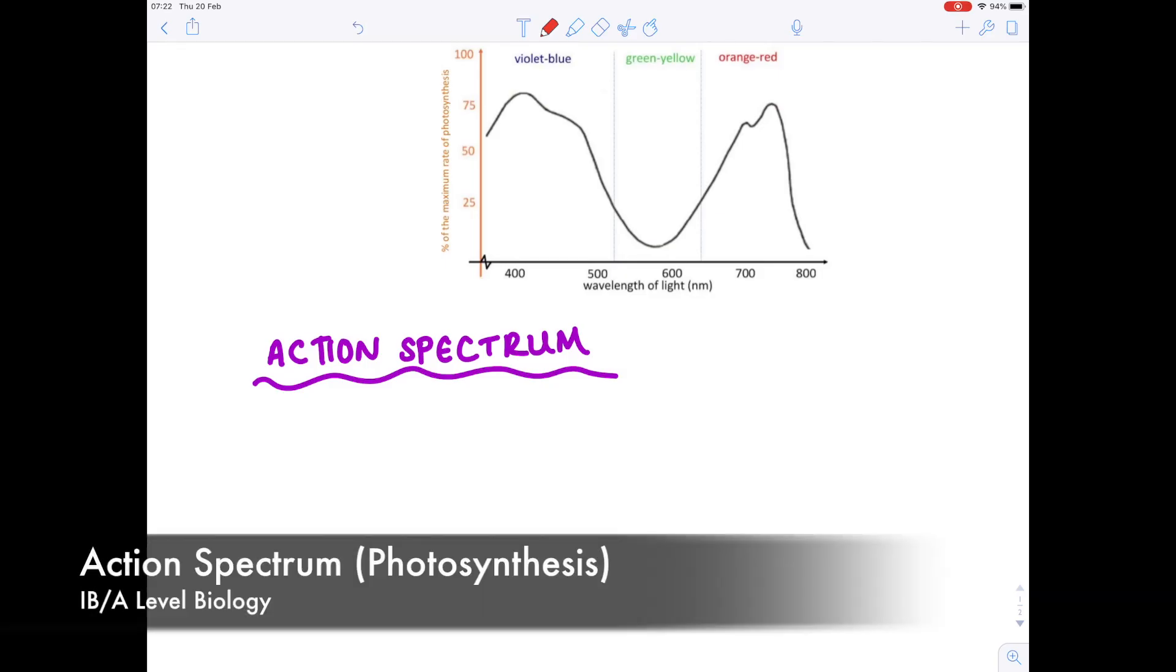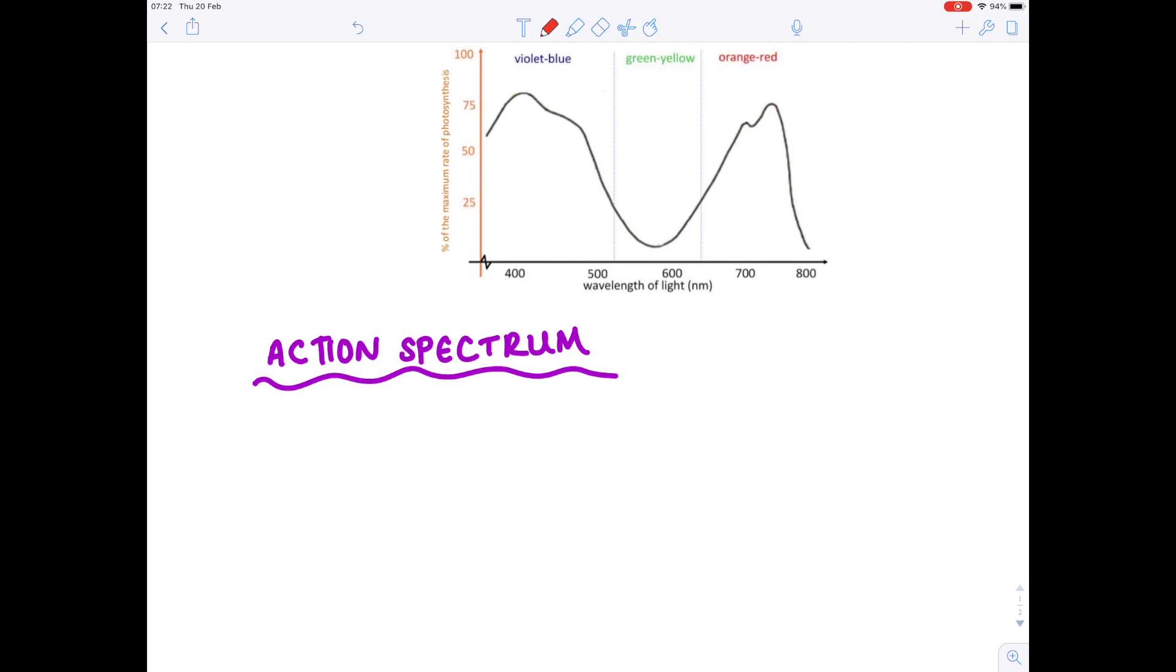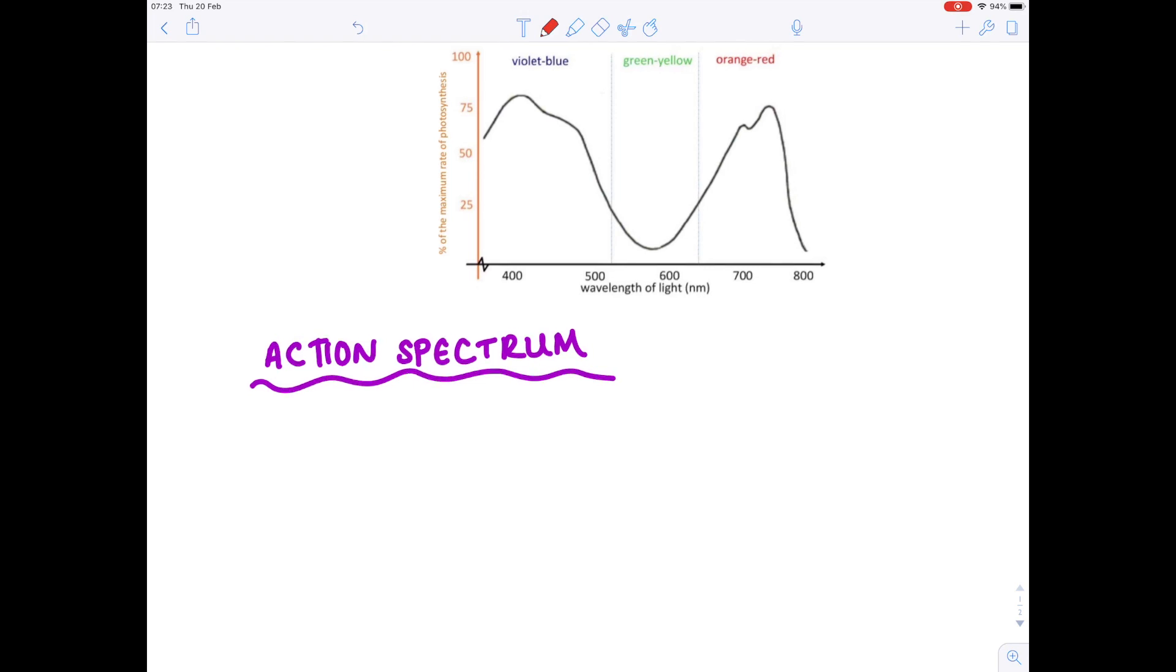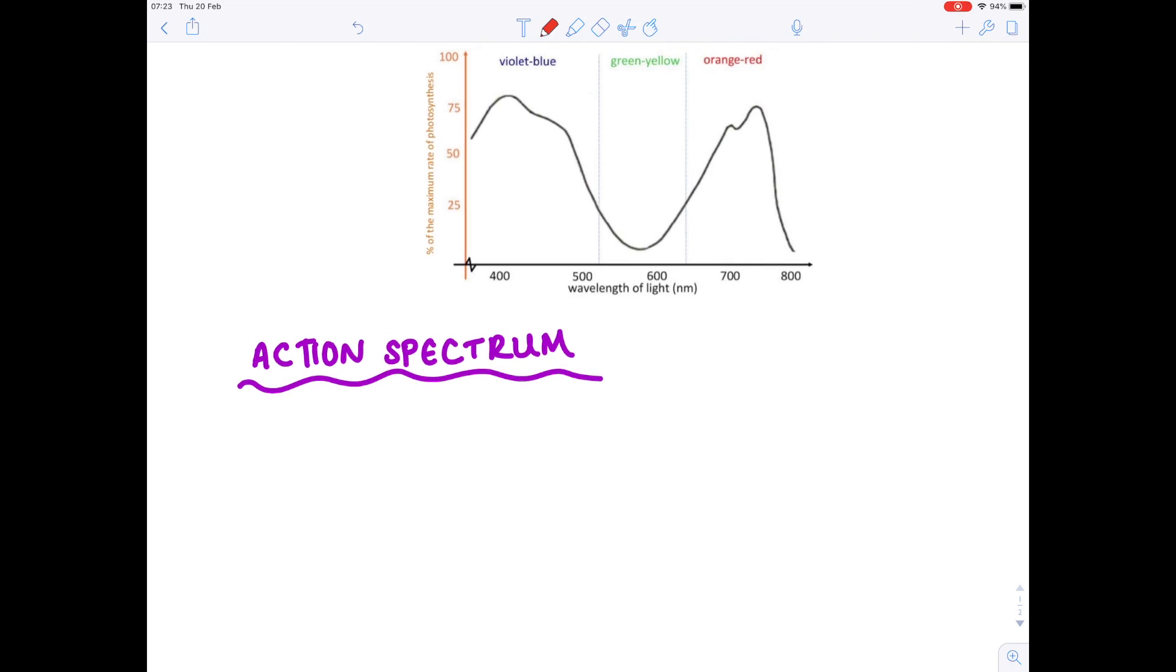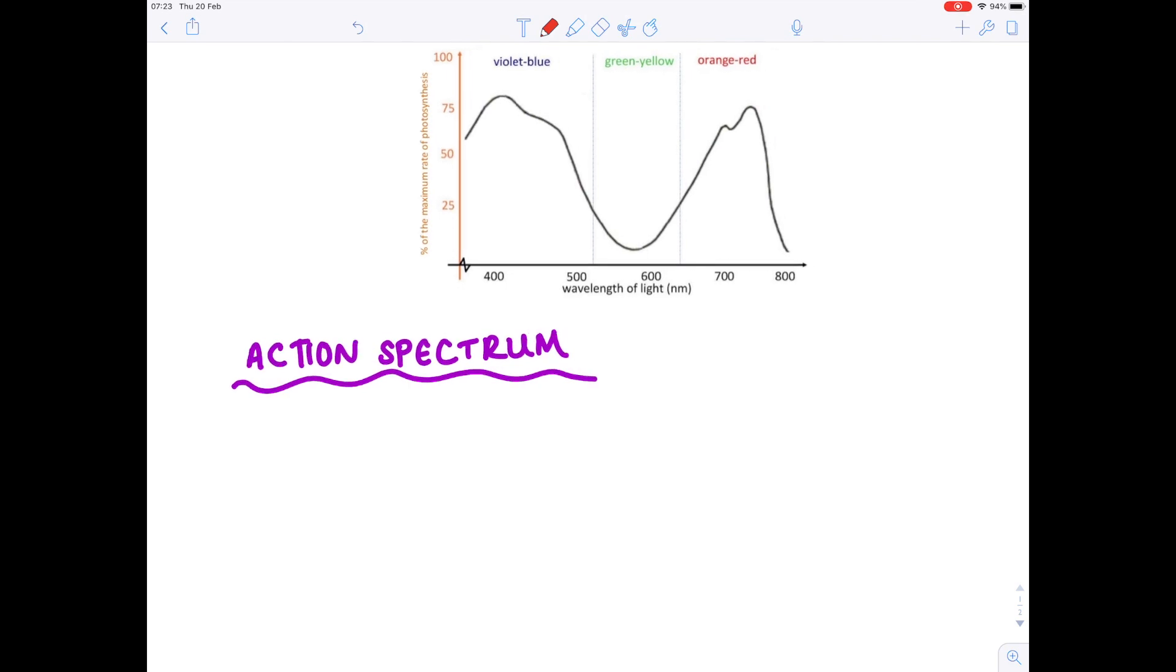In this A-level IB biology video we're going to be continuing our examination of the photosynthesis topic and in particular, in today's video we're looking at action spectra. Now action spectrum shows the rate of photosynthesis for each wavelength of light as a percentage of the maximum possible, and don't worry I will talk about this in greater detail but let's first of all write what it is.